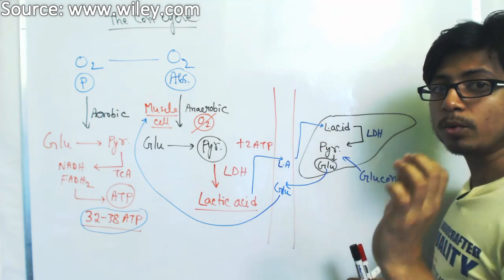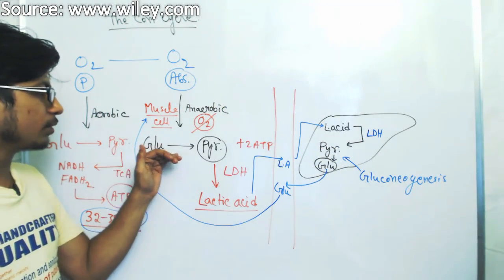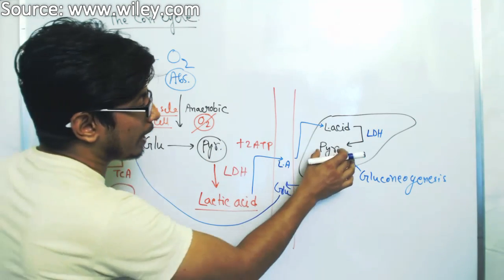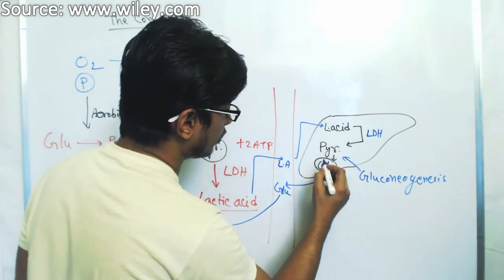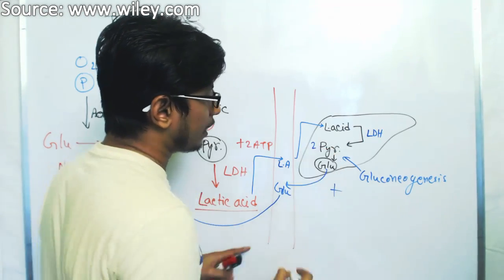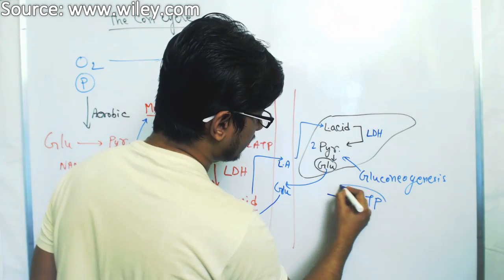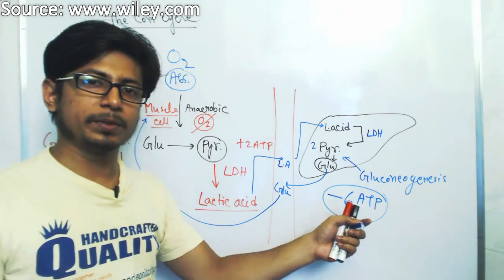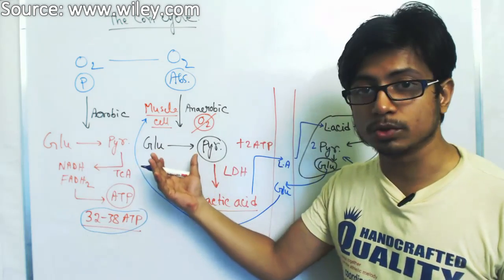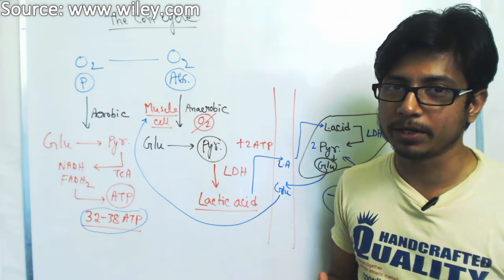The muscle can then utilize glucose through glycolysis, the Krebs cycle, and the electron transport chain to produce the desired amount of ATP. One important thing to note: converting glucose to pyruvate only takes two ATP, but going from two pyruvate molecules back to one glucose molecule through gluconeogenesis actually consumes six ATP molecules. So it is an energy-consuming process, but the body will do it anyway because without glucose as fuel, the muscles will fail to work.